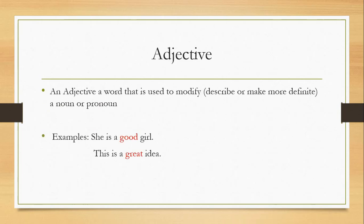An adjective is a word that is used to modify, describe, or make more definite a noun or pronoun. For example, she is a good girl. We are describing her, right? Good. We are describing the noun. This is a great idea. They are adjectives.